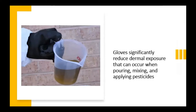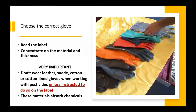Gloves significantly reduce dermal exposure when pouring, mixing, and applying pesticides. Research has shown that handlers mixing pesticides received 85% of total exposure on their hands and 13% on their forearms. However, you must read the label, choose the correct glove, and focus on the material and thickness. It's very important you don't wear leather, suede, cotton, or cotton-lined gloves when working with pesticides unless instructed to do so — these materials absorb chemicals. Note that some pesticides, such as fumigants, require cotton gloves because gas can get trapped underneath nitrile or rubber gloves and burn the handler's skin.